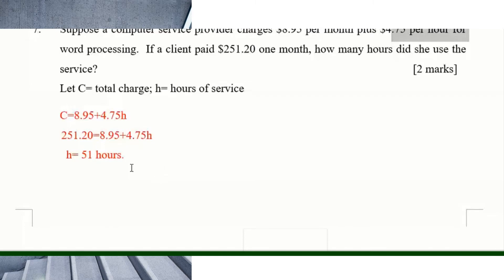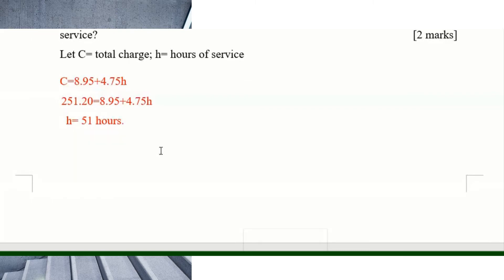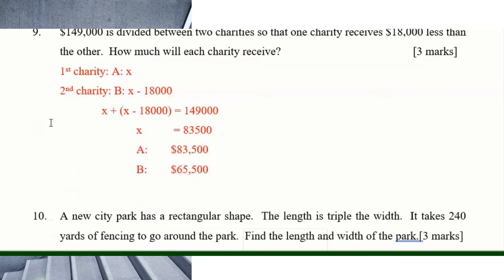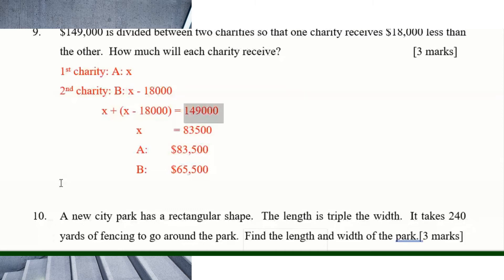The sum of 8 and 5 times a number is 53 — solve for the number. Number nine: $149,000 is divided between two charities so that one receives $18,000 less than the other. Always use one unknown: one is x, the other is x minus 18,000. So x plus (x minus 18,000) equals 149,000. Solve for x; you get x equals $83,500, and the other charity receives $65,500.